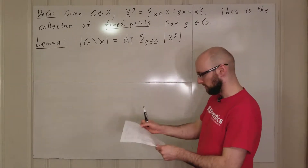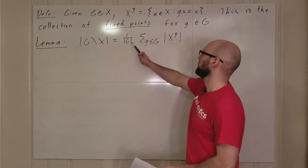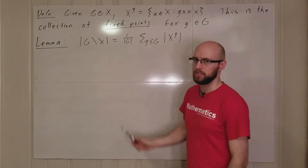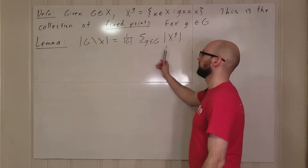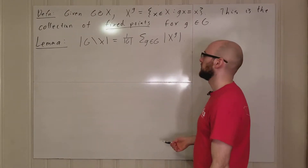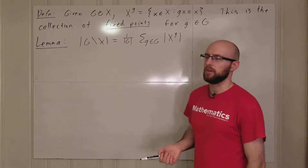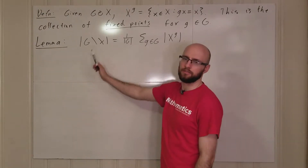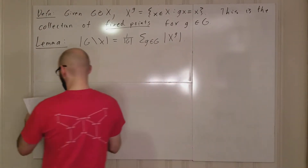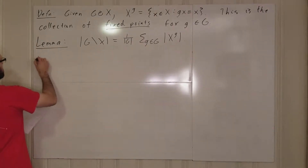The interesting thing here is that when you just look at this formula — a sum times one over |G| — there's no reason to think it's a whole number. But it turns out it is, because it equals the number of orbits. Anyway, let's prove this.